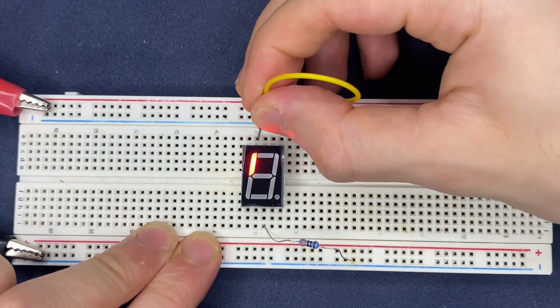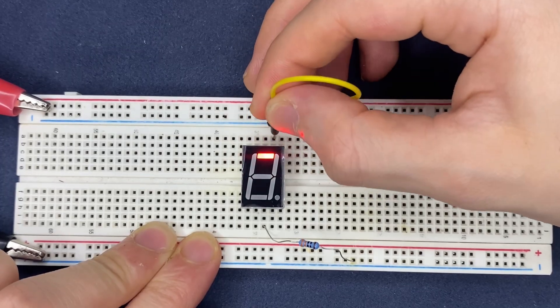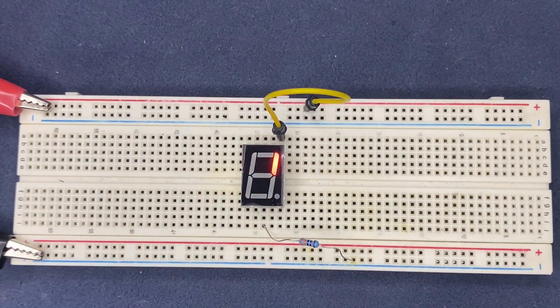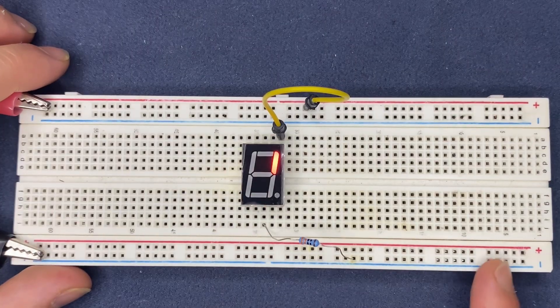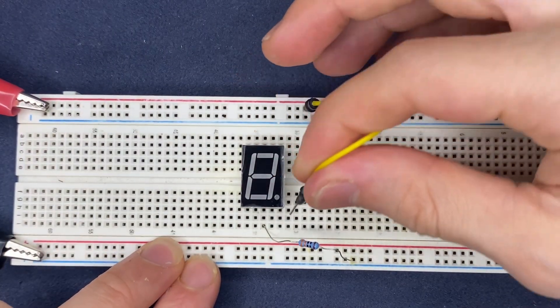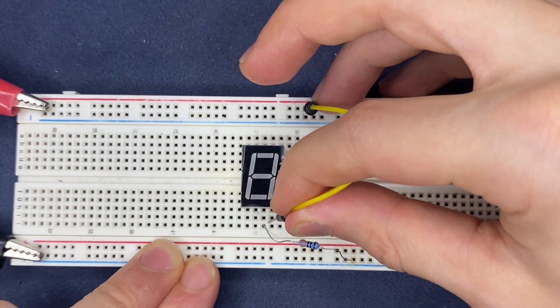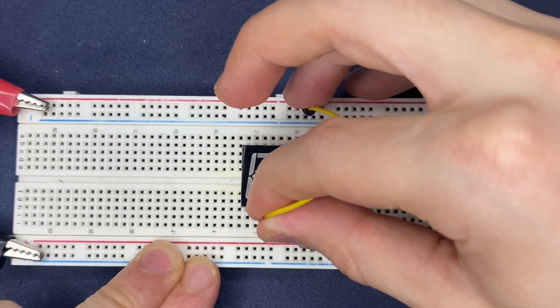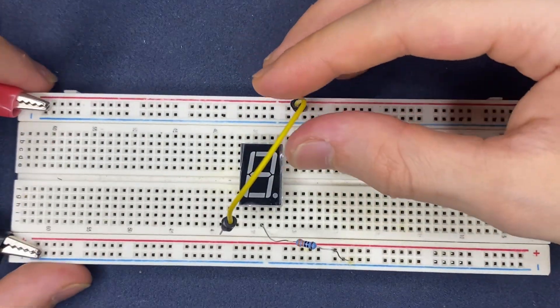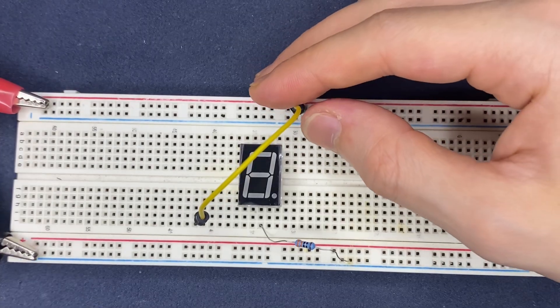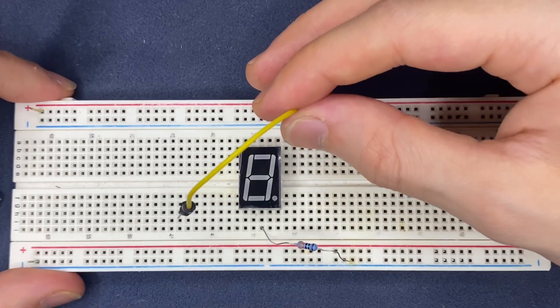As you can see, the 7-segment display, the segments are glowing up. It means that we have a common cathode in this case. Let's check the other segments, working, working, yes, that 7-segment display is fine. All of the segments are working.